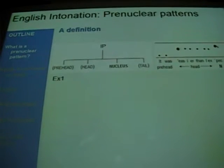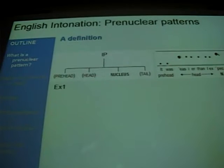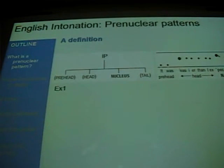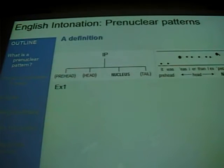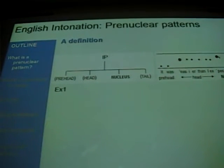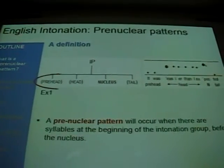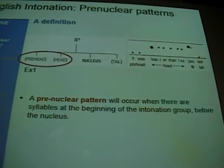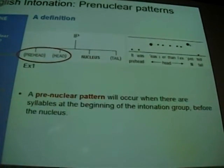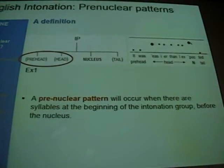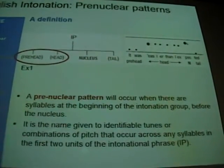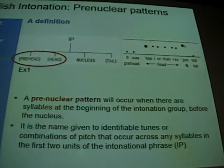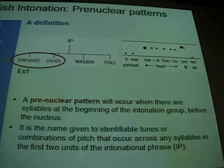We need to start with a definition: what is a pre-nuclear pattern? The first diagram is one you've seen before, showing the components of the intonational phrase, and next to it is one where the phrase is filled in — that's example one in your handout. A pre-nuclear pattern will be found when you've got syllables preceding the nucleus — syllables at the beginning of the word group before we get to the nucleus. It's a name given to the tunes or pitch patterns found on these syllables, a combination of the pre-head and head.